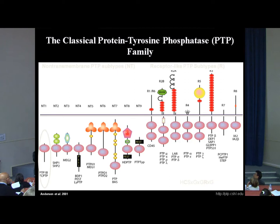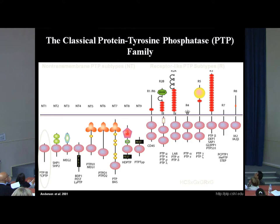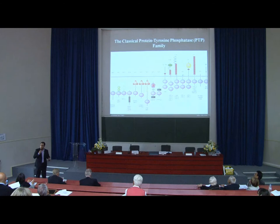Overall, the family is divided into the receptor-like protein tyrosine phosphatases and the non-membrane-bound protein tyrosine phosphatases. My lab works on both families, but for this talk I'm going to focus on one phosphatase called protein tyrosine phosphatase 1B, which I will refer to from now on as PTP1B.